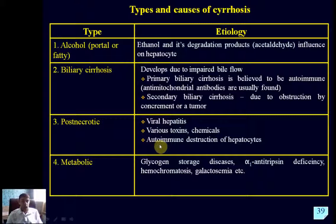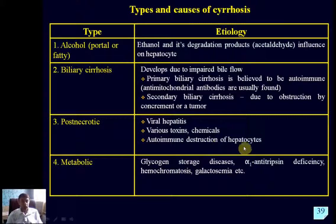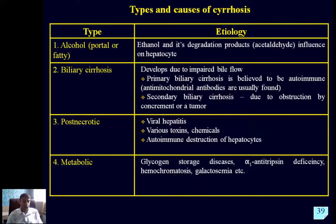We also have less common but interesting types of cirrhosis related to glycogen storage diseases, alpha-1 antitrypsin deficiency, hemochromatosis due to accumulation of iron in the body, and Wilson's disease, among others.